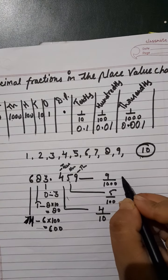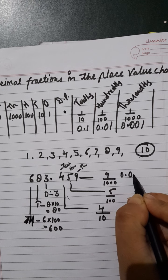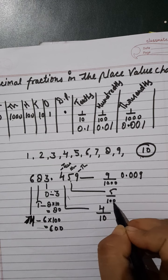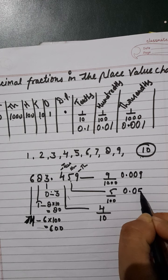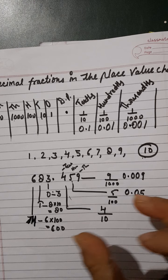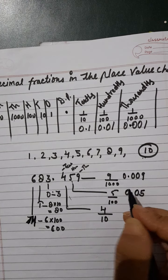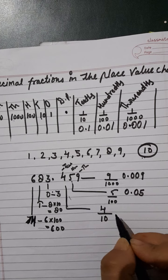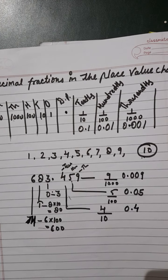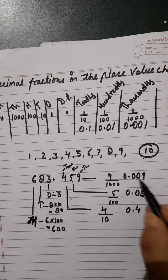In the decimal part, here we have three zeros so we write three digits after the decimal point: 0.009. Here we have two zeros so we write two digits: 0.05. And here we have one digit after the decimal, so we write 0.4. So in the decimal part it is 0.4, 0.05, and 0.009.